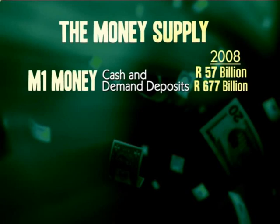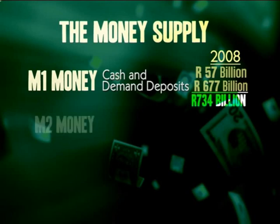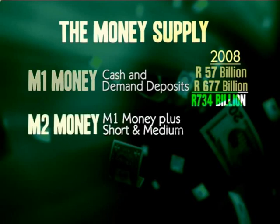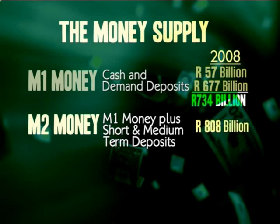Cash and demand deposits added together form what is called M1 money, which totaled over 734 billion rand. Now if we add in short and medium term deposits — that is, less liquid deposits that cannot usually be withdrawn immediately, like 30-day accounts — to M1 money, we get M2 money. In 2008, short and medium term deposits totaled almost 808 billion rand.